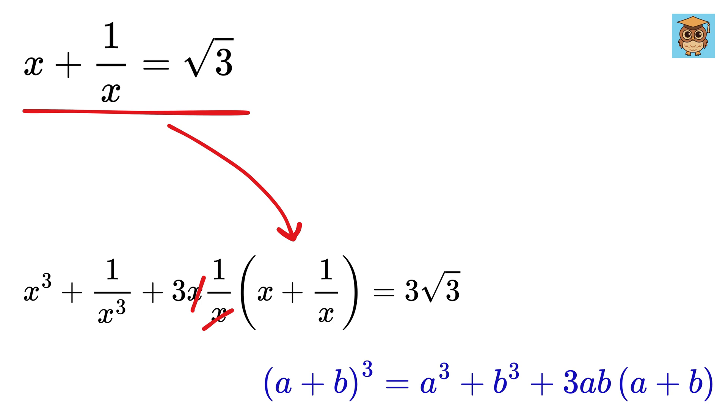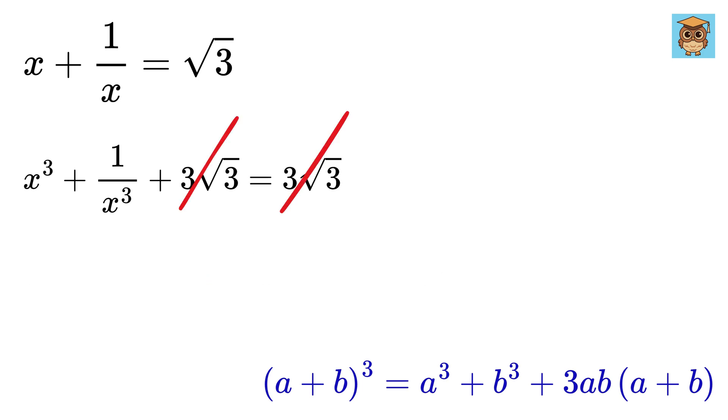This will get cancelled out, and we can put root 3 here instead of x plus 1 over x, to get this whole thing as x cube plus 1 over x cube plus 3 times root 3 equals 3 times root 3. This will also get cancelled out, and we get this thing as 0.